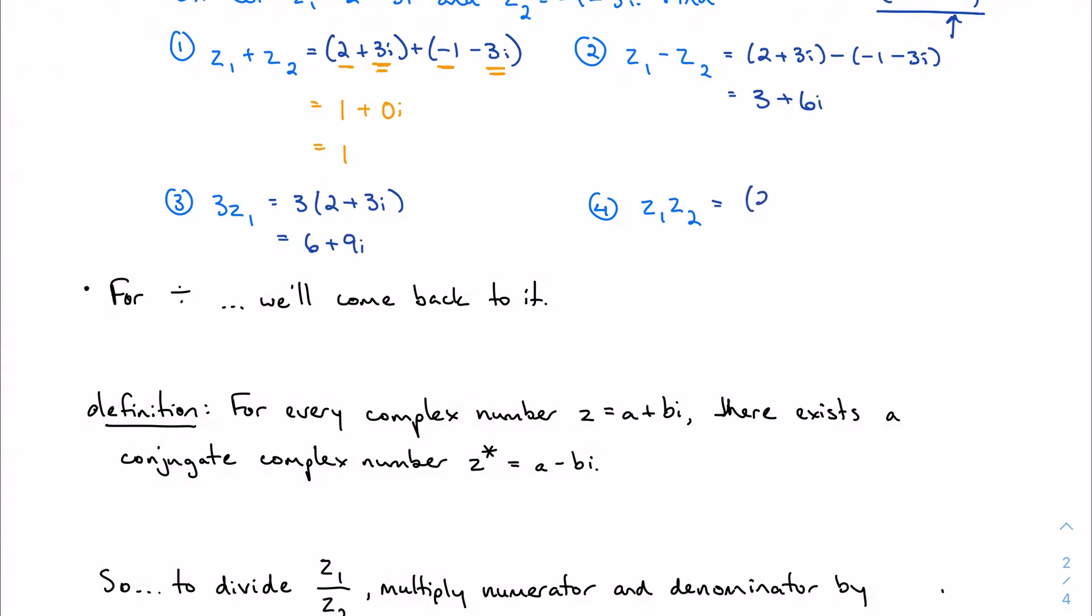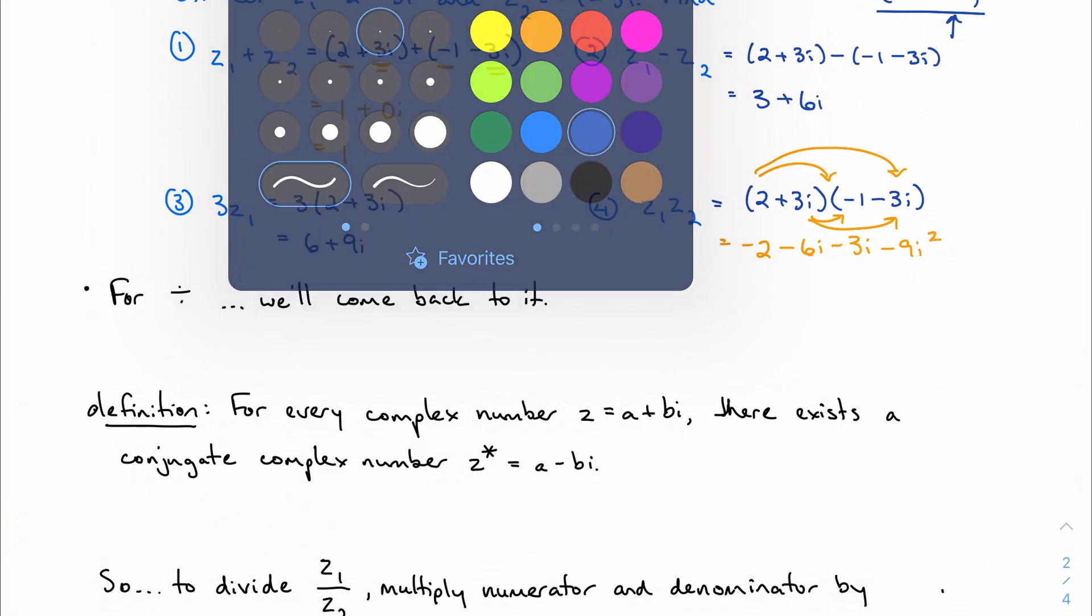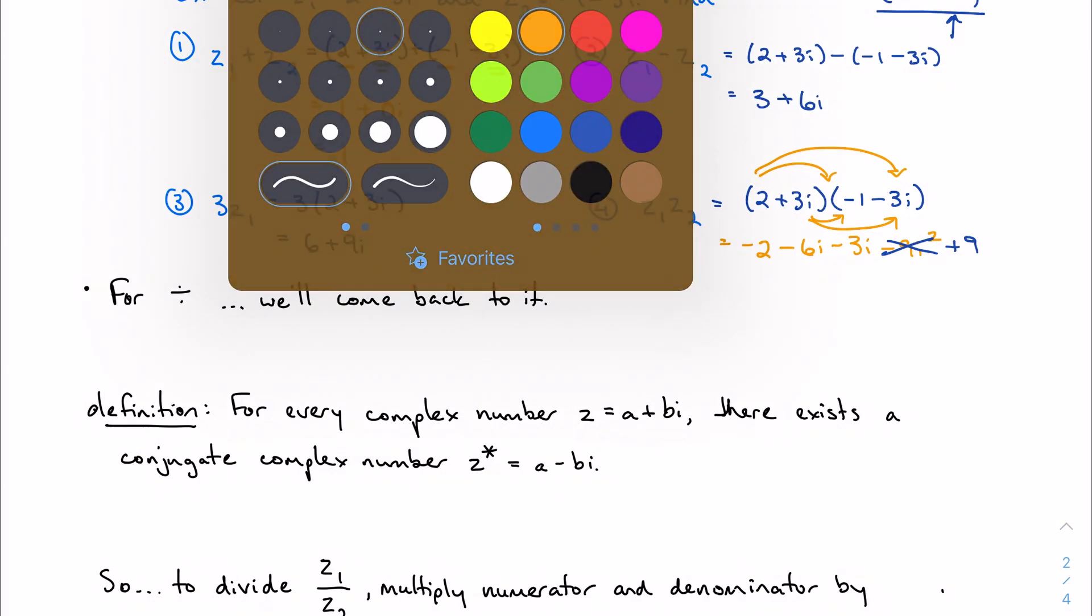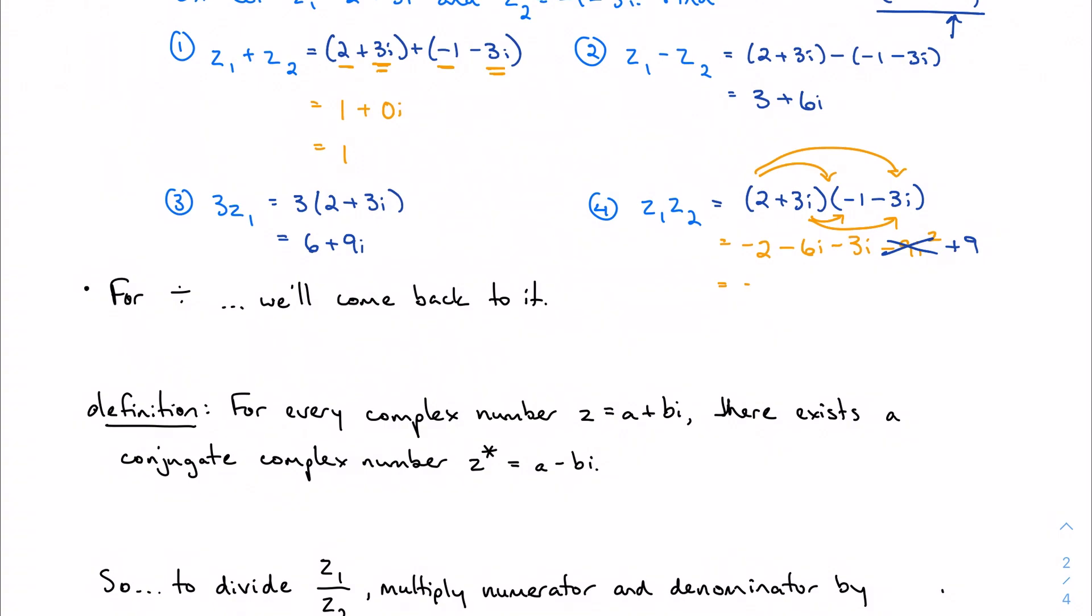Multiplication is going to work just like normal—this looks a lot like FOIL. So that's exactly what we're going to do: negative 2 minus 6i minus 3i minus 9i squared. I'm going to apply my identity i squared is negative 1, so this turns into a plus 9 instead, right? Negative 9 times negative 1. My final answer is going to be 7 minus 9i.